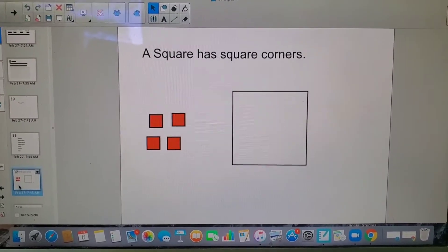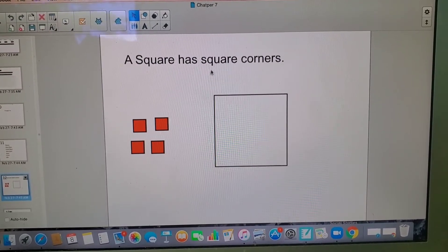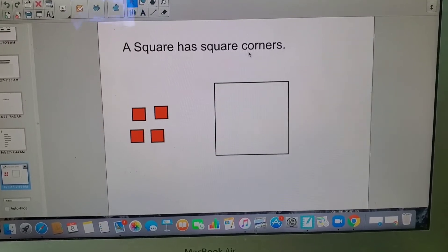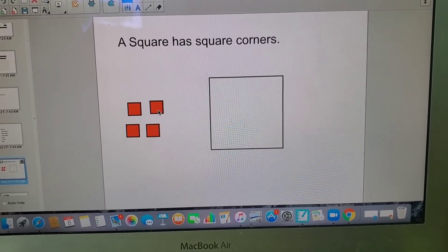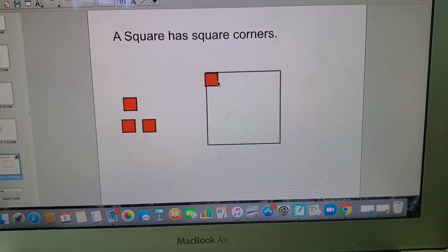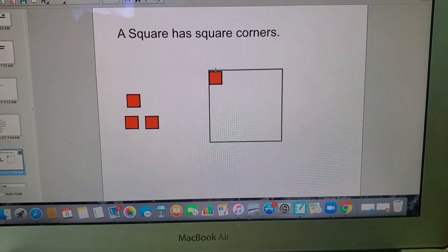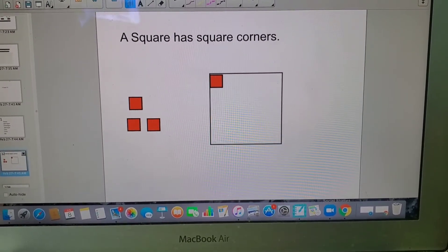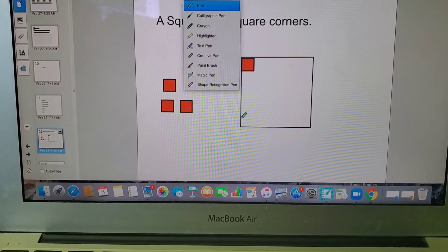Now that we've reviewed, let's move on. We are going to learn some more about corners. We're going to learn about square corners. So let's see—a square has square corners. To know if a shape has a square corner, you can put a square in it like this. Do you see how that square fits perfectly inside?